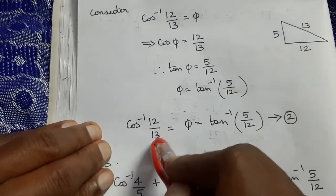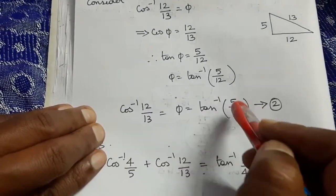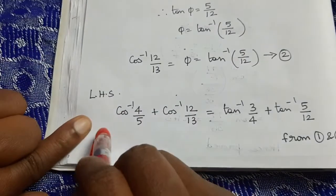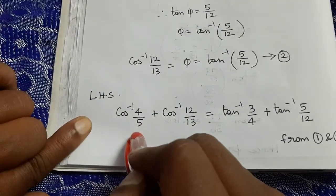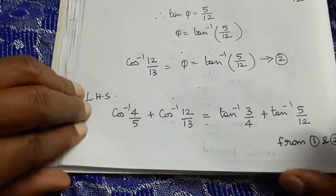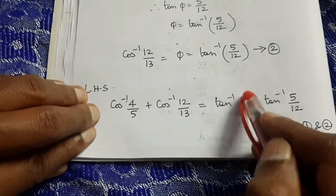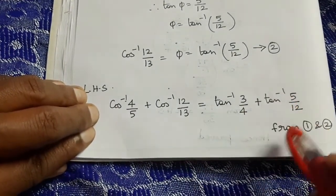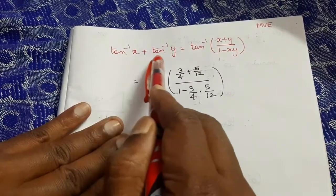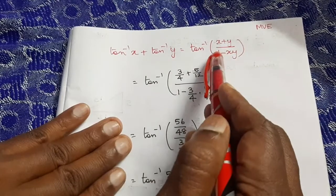Similarly, let φ = cos⁻¹(12/13) = tan⁻¹(5/12). LHS = cos⁻¹(4/5) + cos⁻¹(12/13) = tan⁻¹(3/4) + tan⁻¹(5/12). Using the formula tan⁻¹(x) + tan⁻¹(y) = tan⁻¹((x + y)/(1 − xy)).